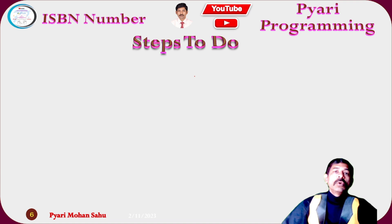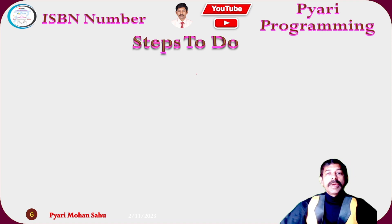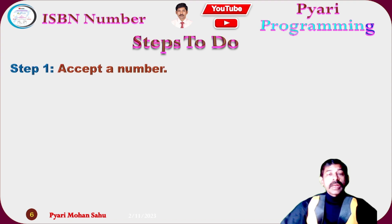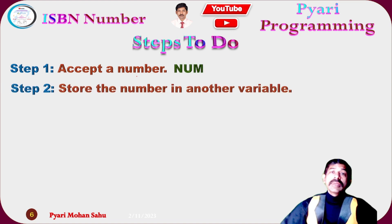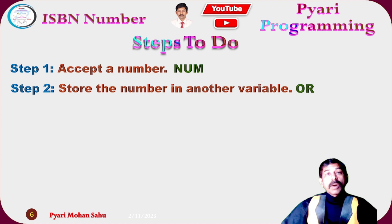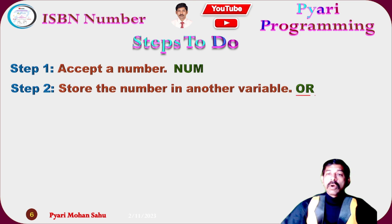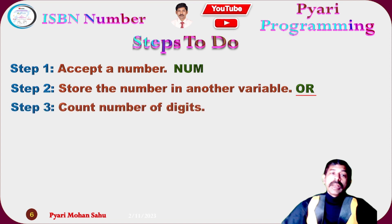Now let's outline the algorithm steps. First, accept and store the number in a variable called 'num'. Then take a backup of the number in another variable 'or', because when counting digits the number will become zero inside the loop and we need the original for further processing.